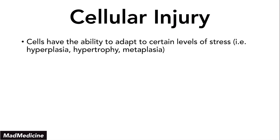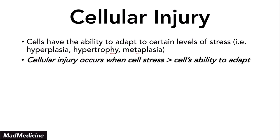Remember, our cells are able to handle a lot of stress, and they've developed ways to adapt to a certain level of stress through either hyperplasia, hypertrophy, or even metaplasia. But what happens when the level of stress that our cells are under well exceeds our cells' ability to adapt to that stress? Well, in that situation, you are going to get cell injury. Cell injury occurs when the amount of stress being placed upon the cell exceeds the cell's ability to adapt to that stress.